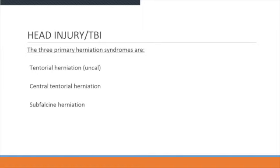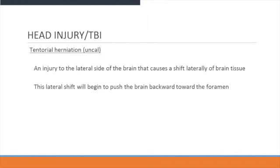There are three primary herniation syndromes. One is tentorial herniation, which is uncal. Then you have central tentorial herniation, and then you have sub-falcine herniation.